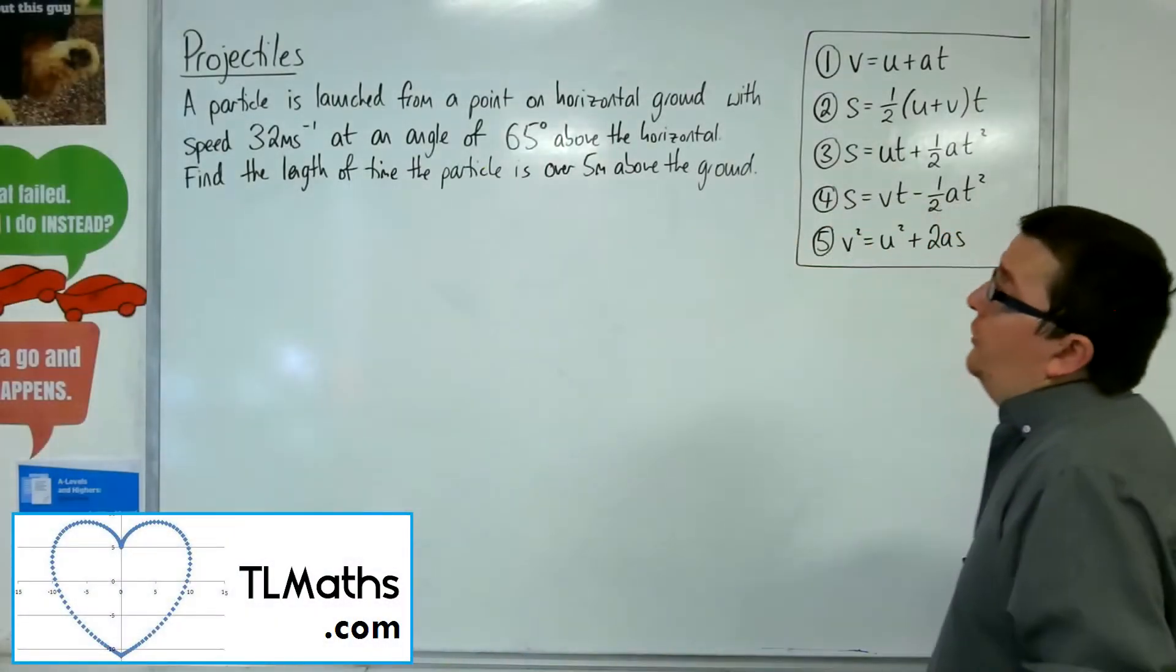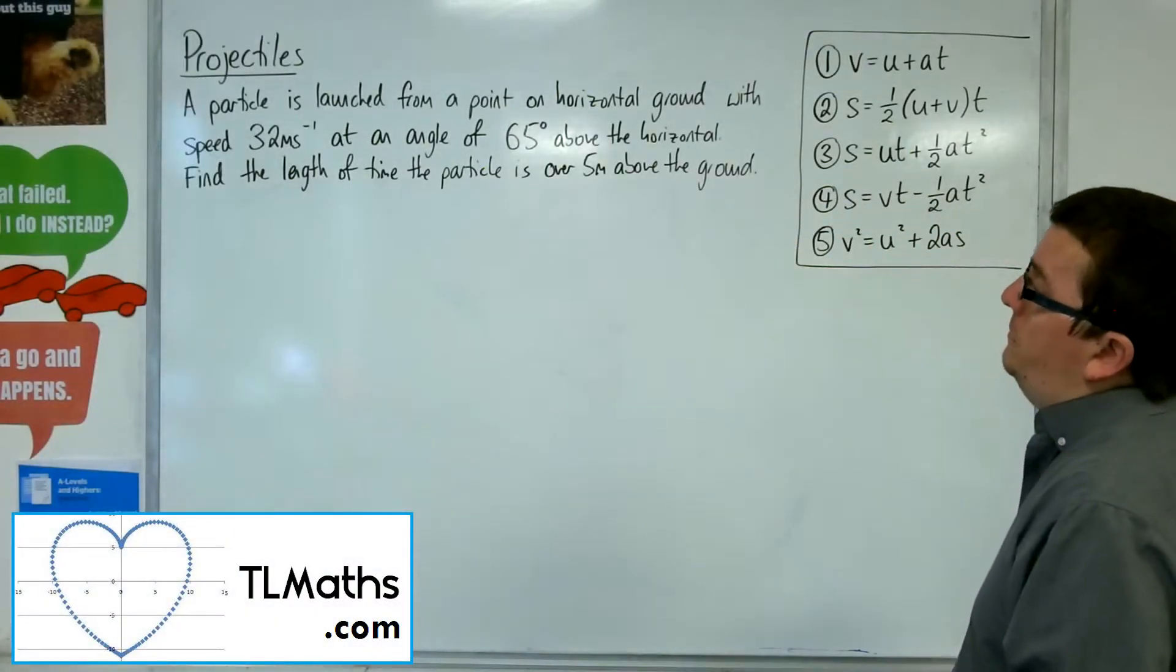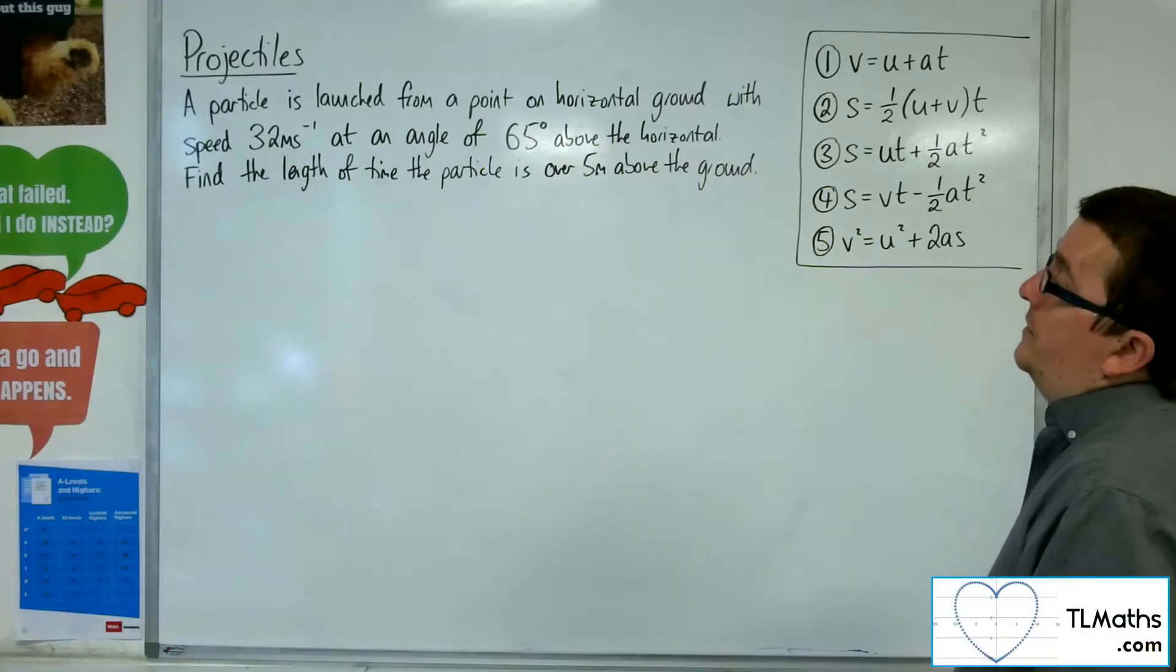Okay, in this video a particle is launched from a point on horizontal ground with speed 32 metres per second at an angle of 65 degrees above the horizontal.